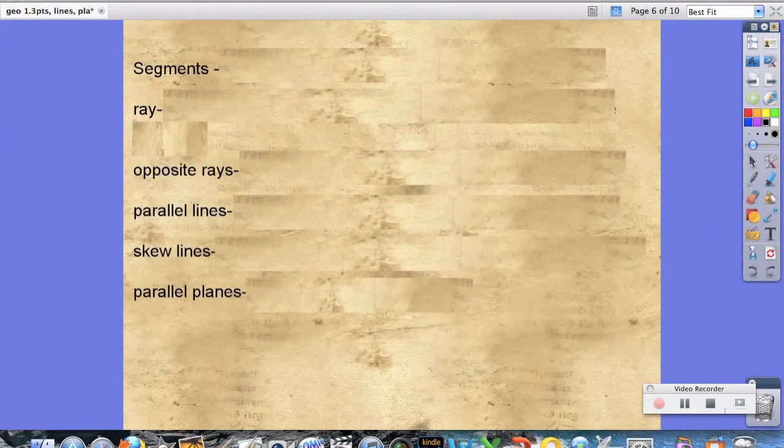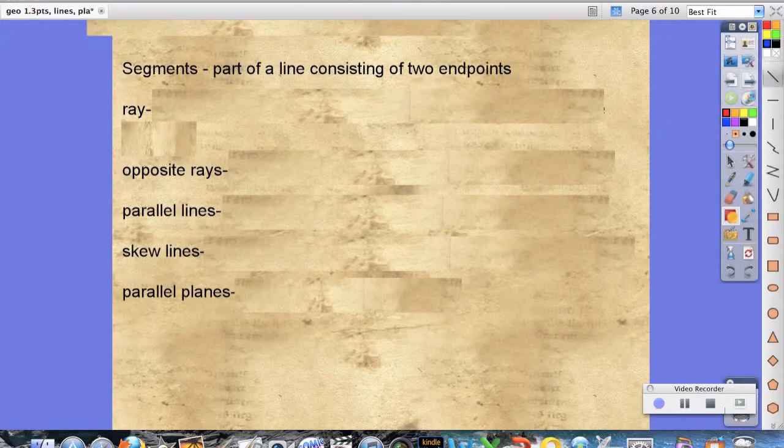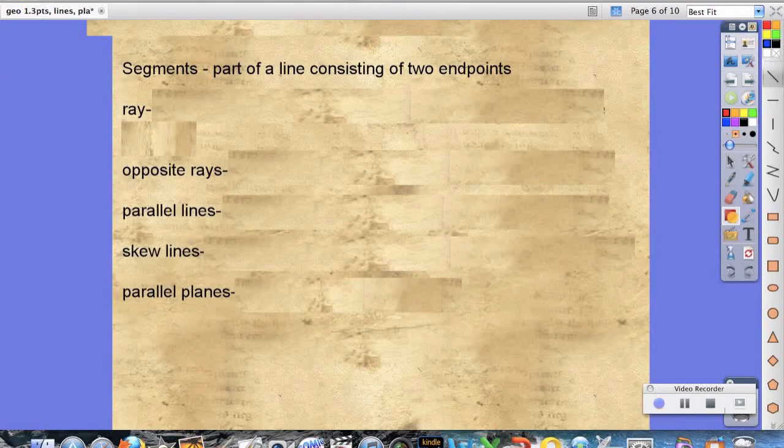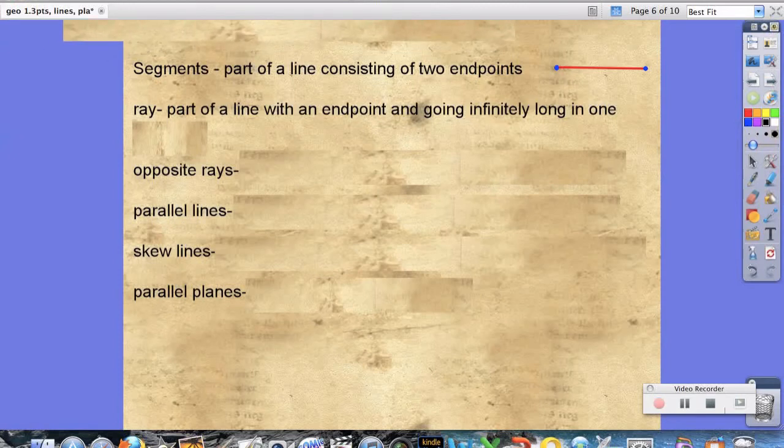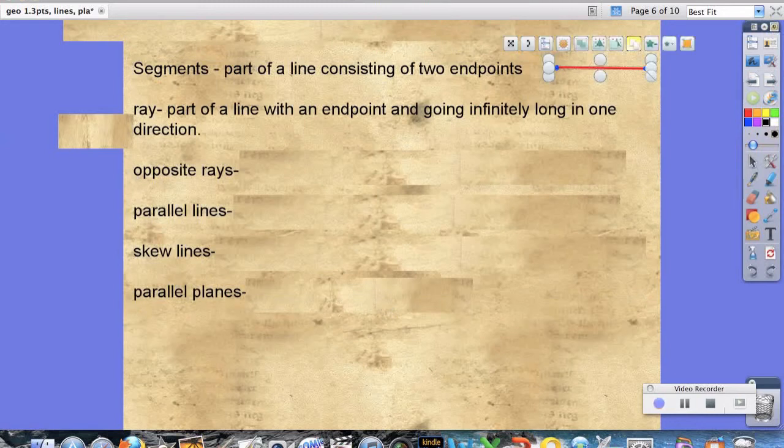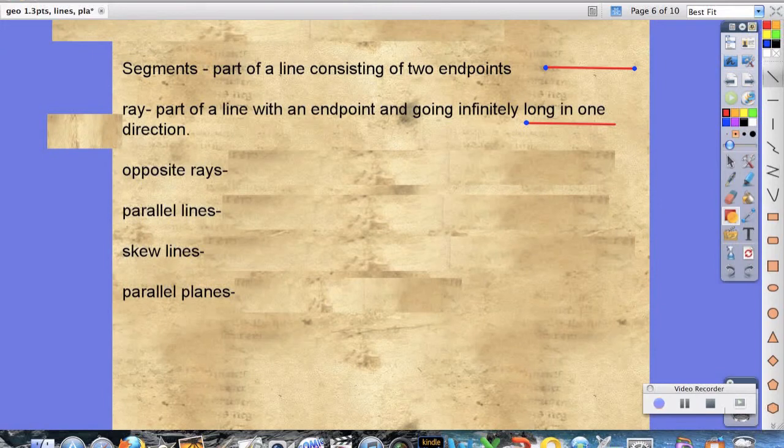So a couple more definitions. We have segments. Segments are part of a line consisting of two endpoints. So a line goes infinitely long in both directions. A segment is part of a line. So it's as if we took a line and just took a chunk out of it. What'll happen is it'll show the pieces that were broken off, and they'll just be a certain length. A ray is part of a line with an endpoint going infinitely long in one direction. So kind of like the tail of a stingray.